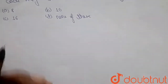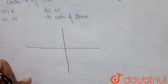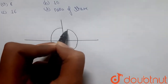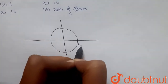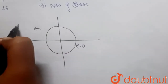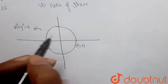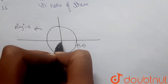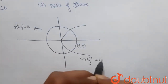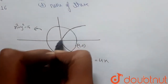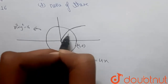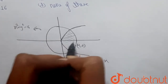So basically we have a circle. Let me draw the diagram first. We have a circle x² + y² = 16, which will cut the x-axis at (4, 0). And then we have a parabola y² = 4x. We have to find all the points which are common to both this parabola and circle and lie in the interior of them — that is, all the points that lie in this shaded part.